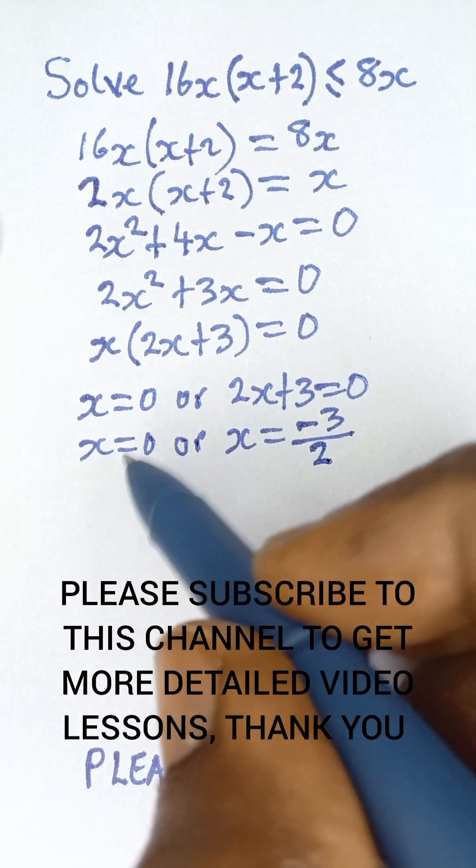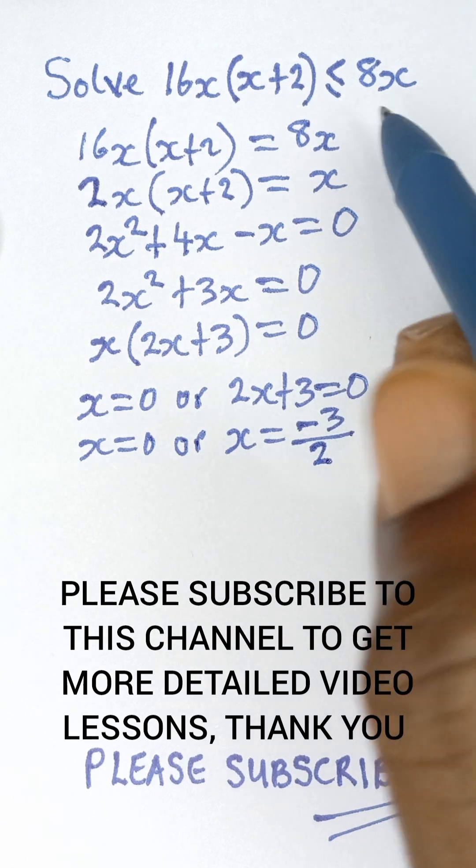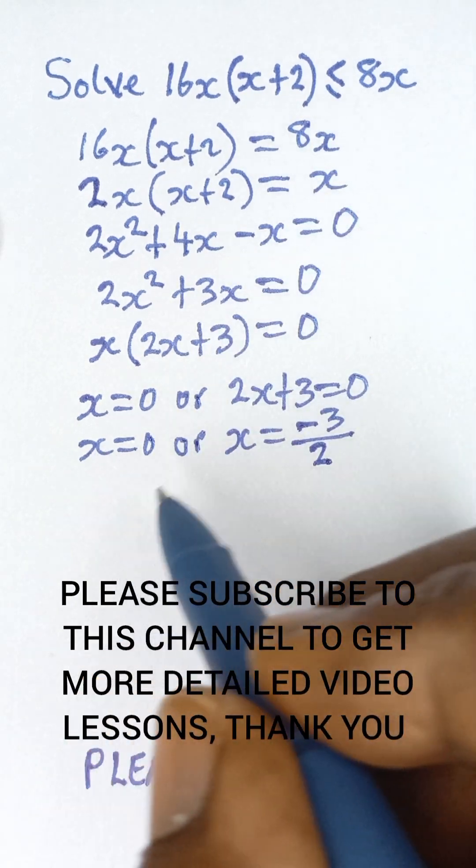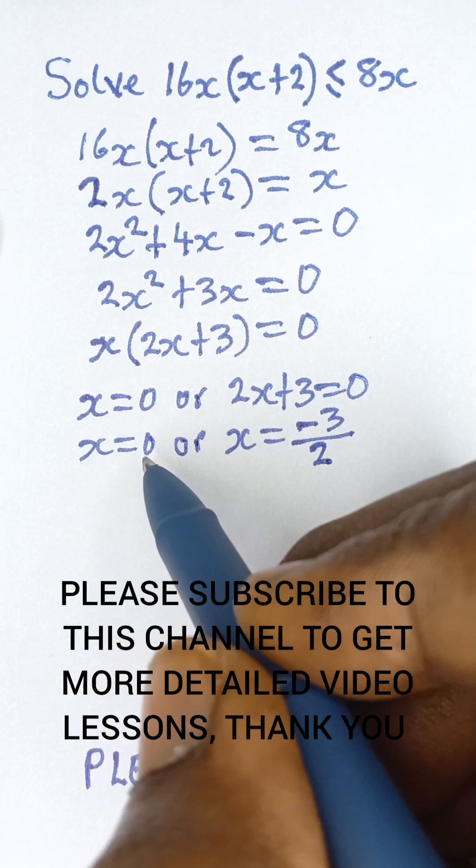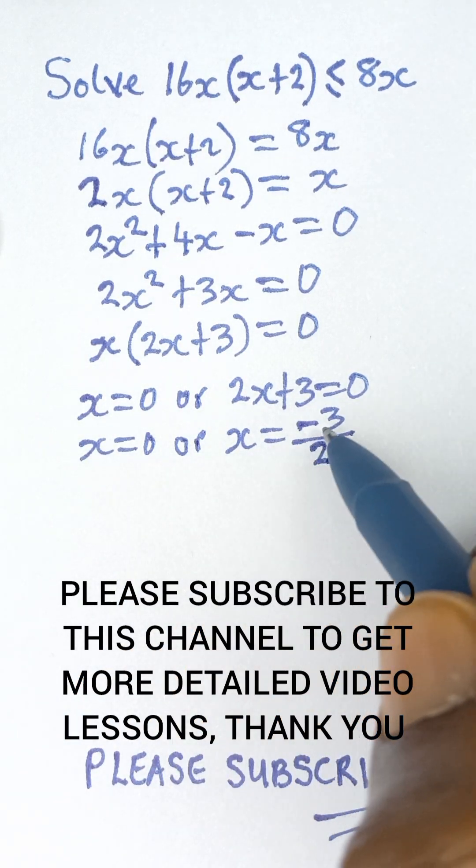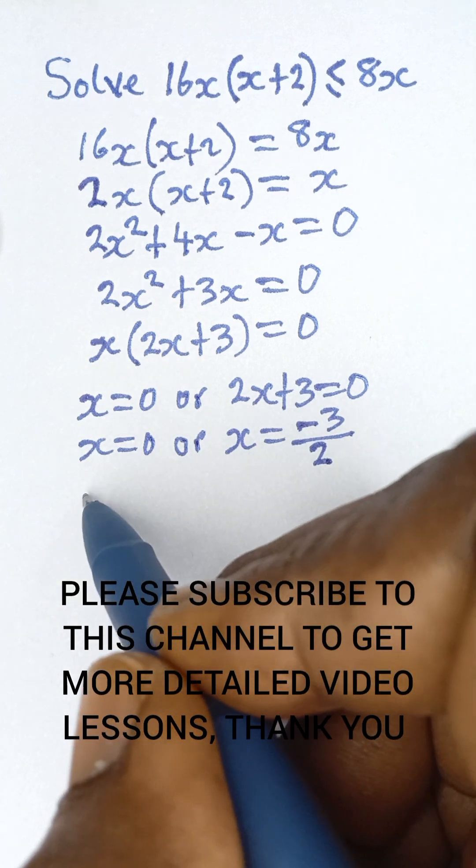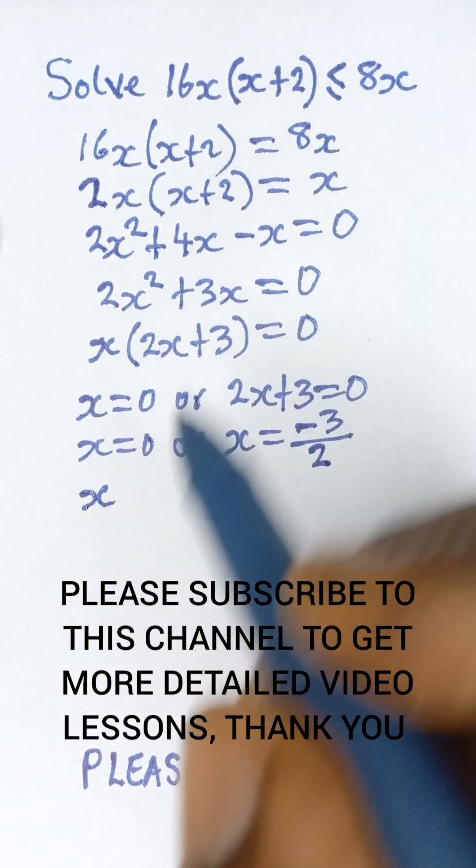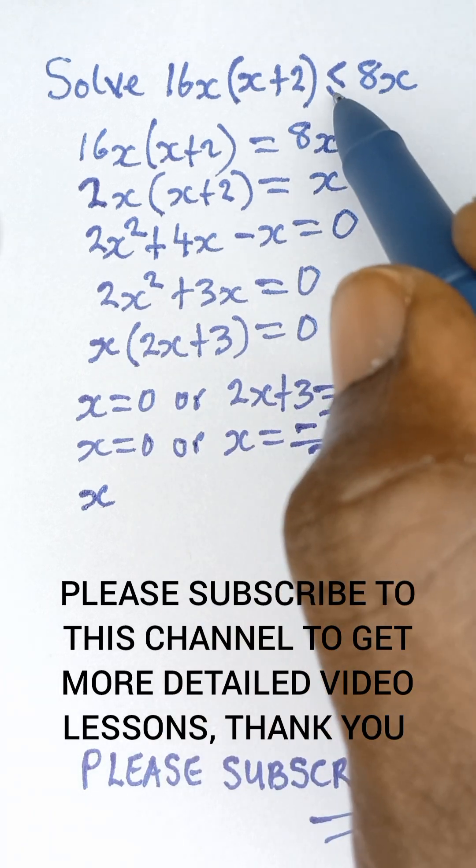Now we have these two answers. Going back to the inequality sign, what we need to do here is to take the higher value between 0 and -3/2. Zero is greater than -3/2, so this 0 takes the original inequality because 0 is the greater value.